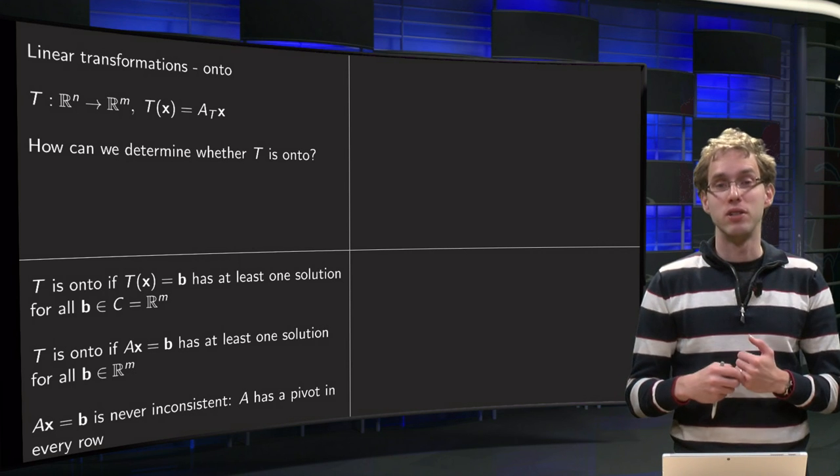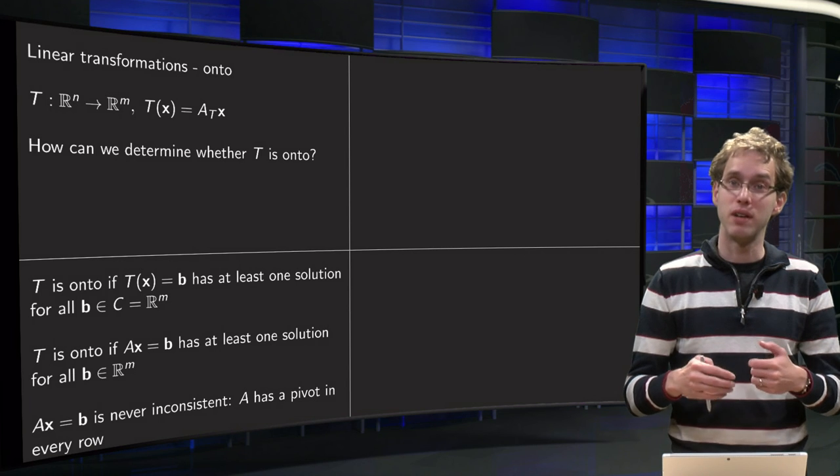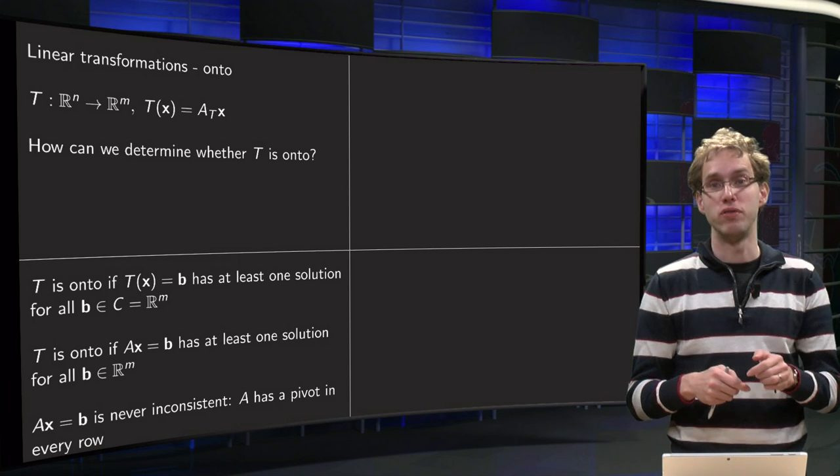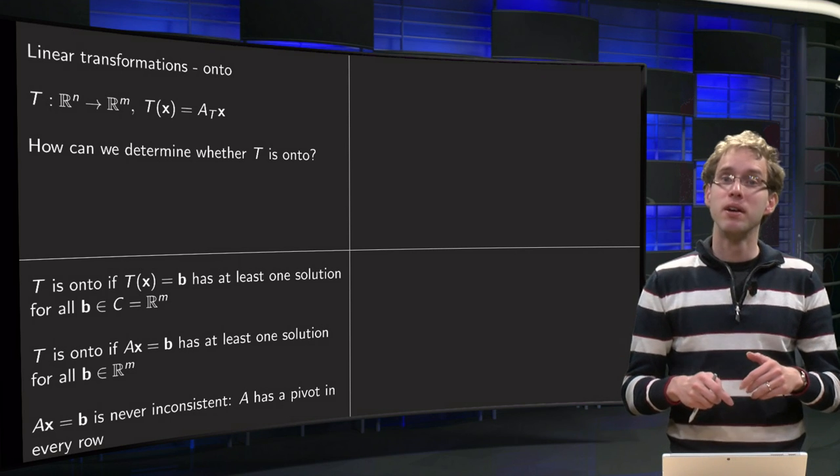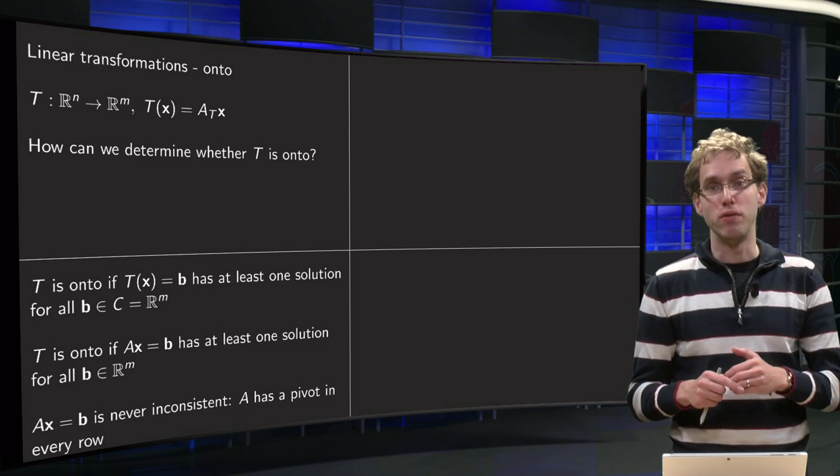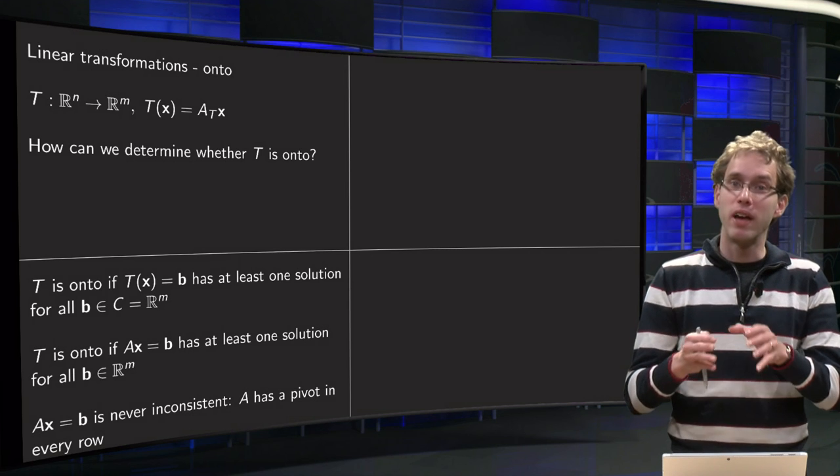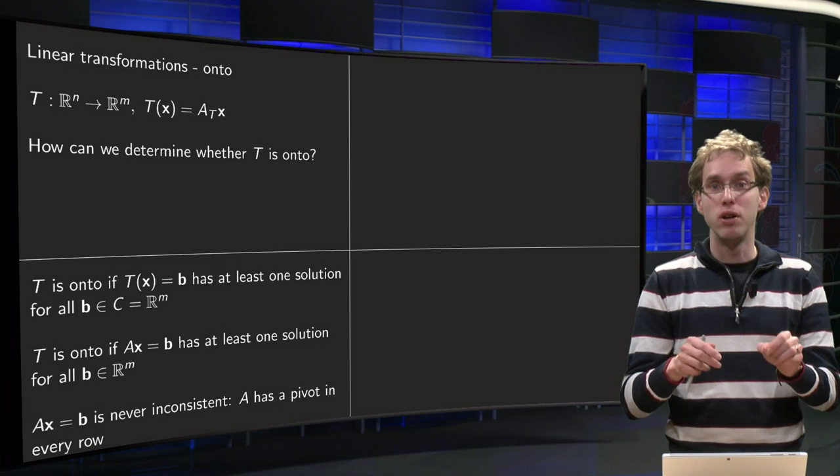So when does the equation Ax equals b always have at least one solution? Well, if you have no rows of zero, so if every row has a pivot, and you want to be able to solve it for any b, so if you have rows with only zeros, you can have inconsistent equations.